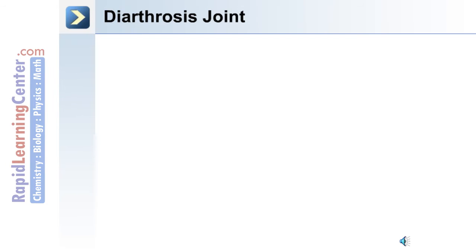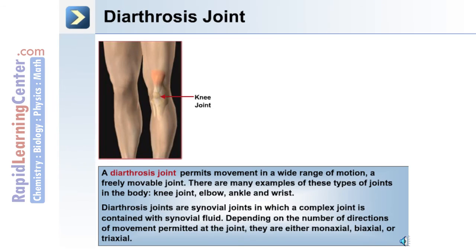The most movable joints in the body are diarthrosis joints. An example is the knee joint, which permits movement in a wide range of motion. Other examples include the elbow, ankle, and wrist.